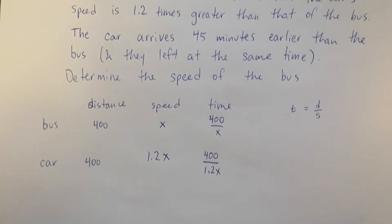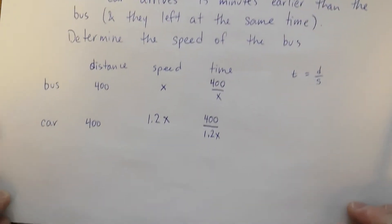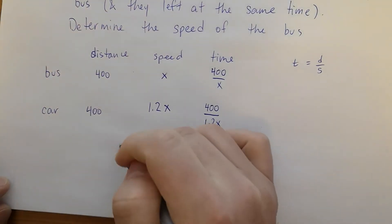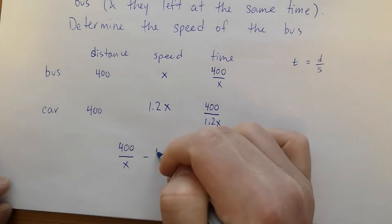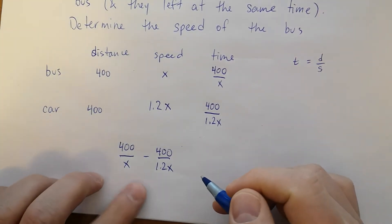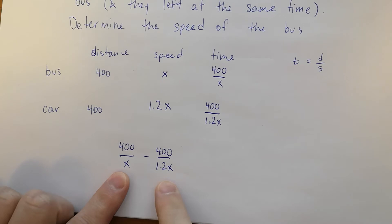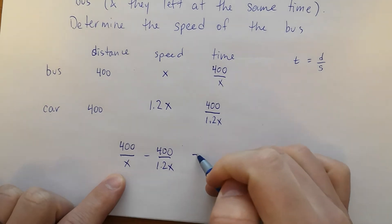Alright, now we need to use this information that the car arrives 45 minutes earlier. So the bus takes more time. It's going to look like this: 400 over x subtract 400 over 1.2x. So this is the time the bus takes. It's more than the car. The time the bus takes is greater than the time that the car takes. So when we subtract this, we get our 45 minutes.